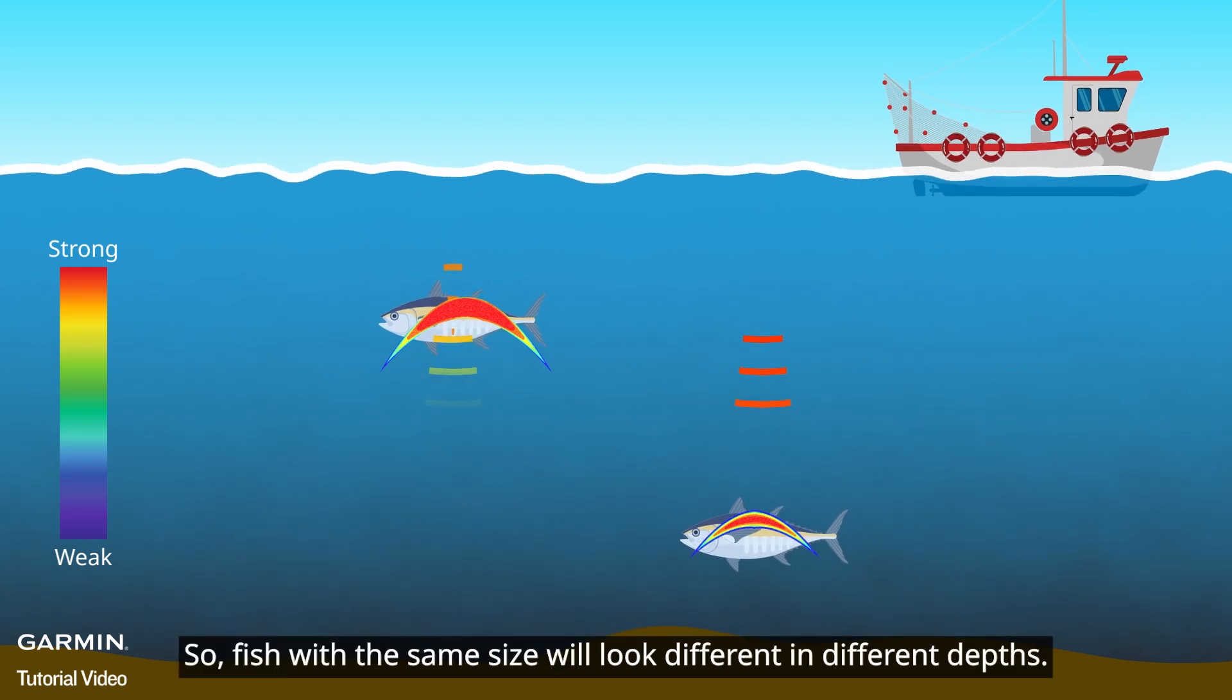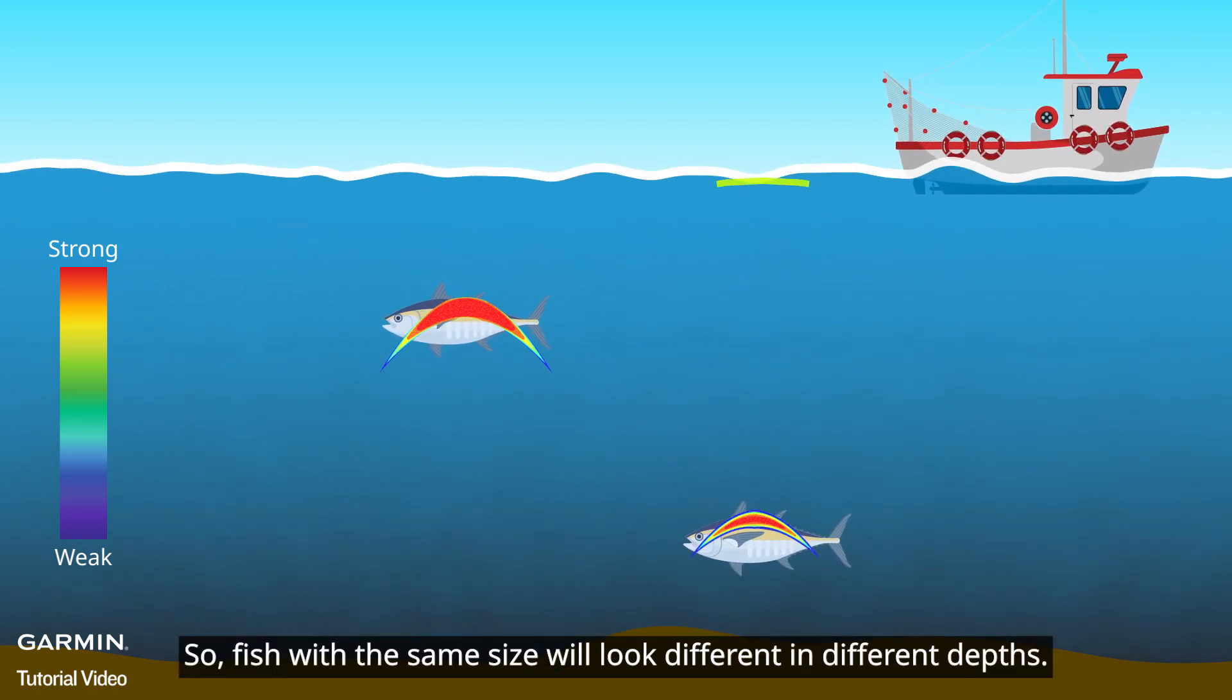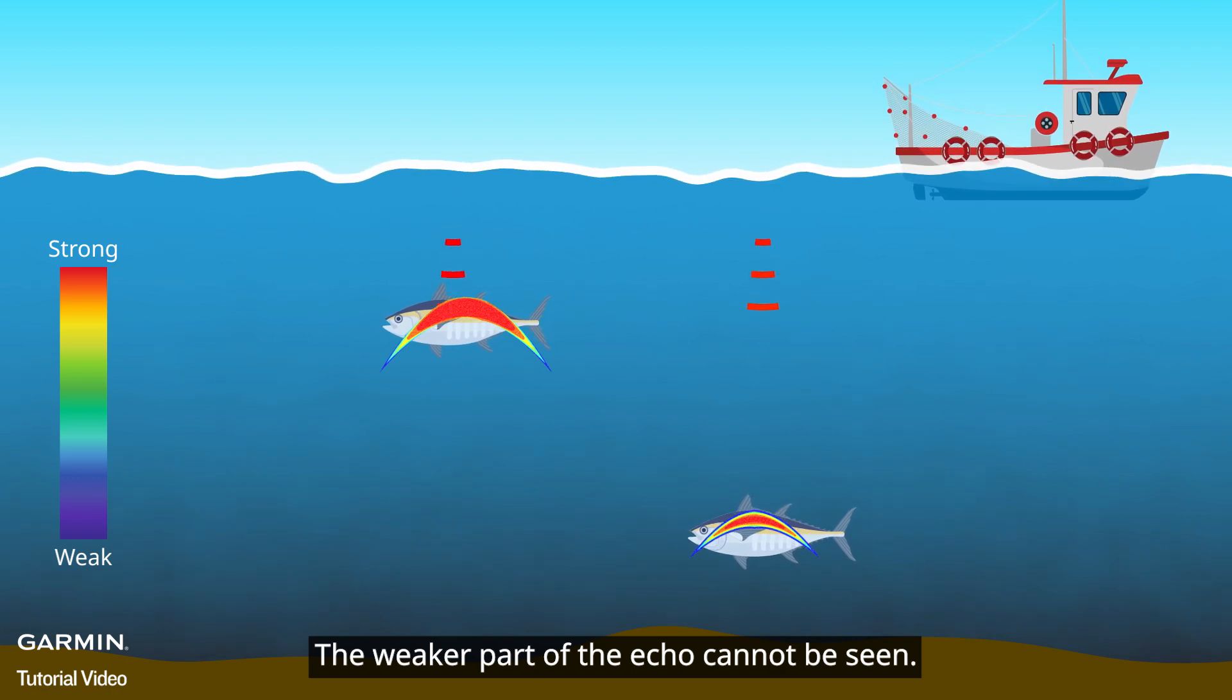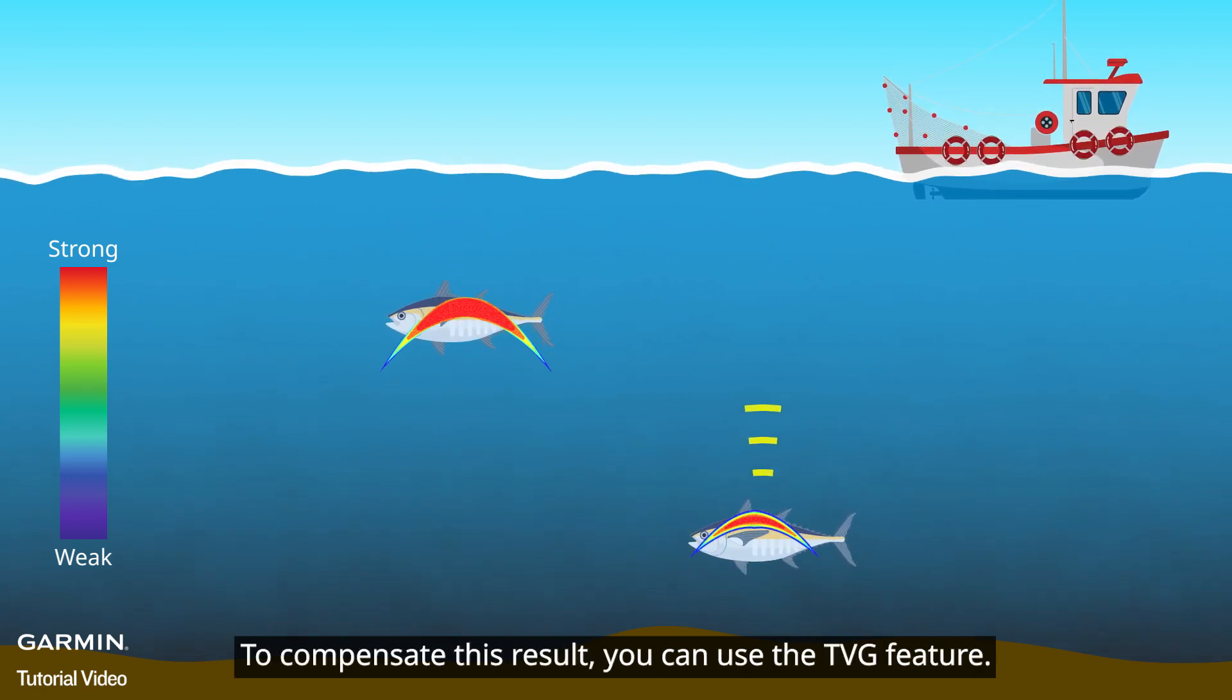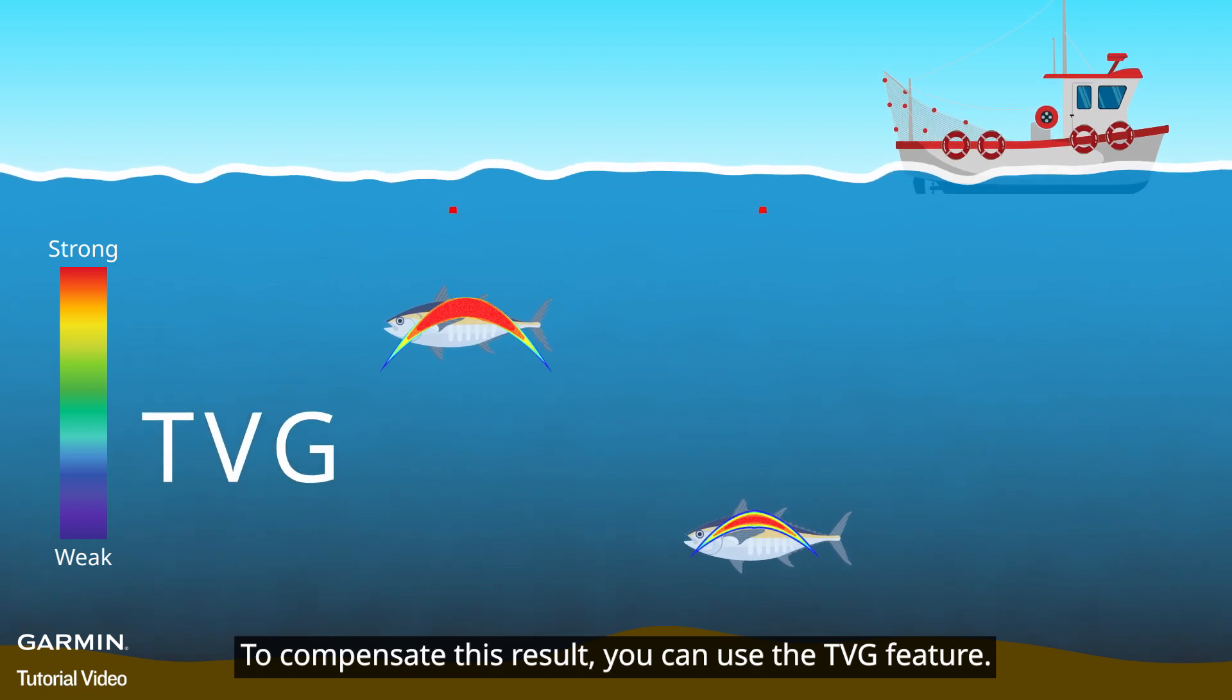So, fish with the same size will look different in different depths. The weaker part of the echo cannot be seen. To compensate this result, you can use the TVG feature.